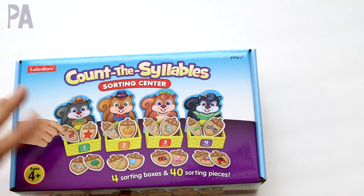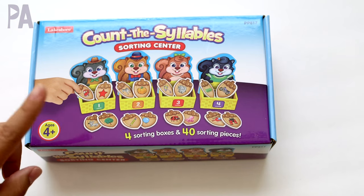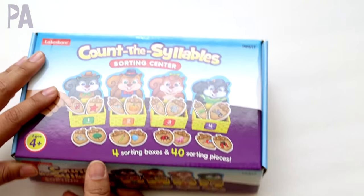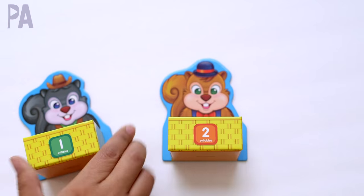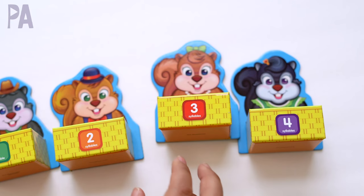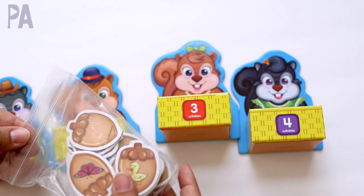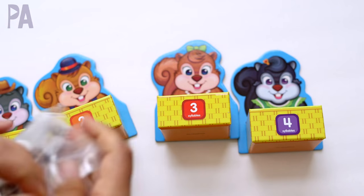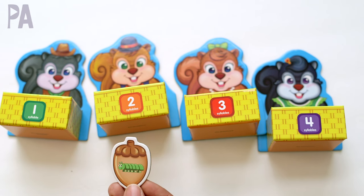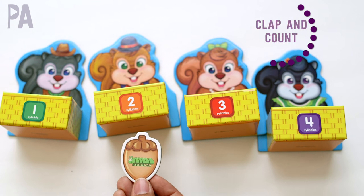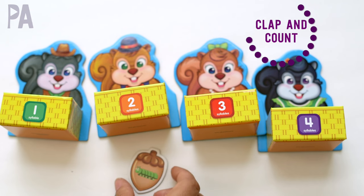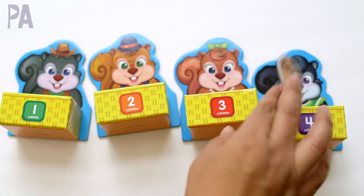This game from Lakeshore Learning, I have shown before. It's a really simple game, I love it a lot. It's for ages four and up, and there are four boxes in here with a number: one, two, three, and four. And they're little baskets. And then you get all of these acorns, and you just basically say the word that's on the acorn and count the syllables as you go along. So what we did is we'd pick one of these acorns, and then my children would clap caterpillar and see how many times they clapped, and then they would put it in the appropriate bucket.